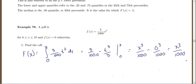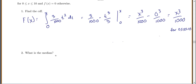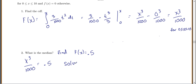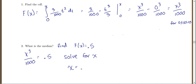What is the median? The median is where we have half the data below and half above — where the CDF equals 0.5. So we set x³/1000 equal to 0.5 and solve for x. We get x equals 7.937, and that is our median. So half the data is below 7.937 and half is above 7.937.